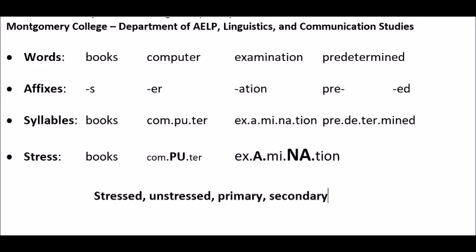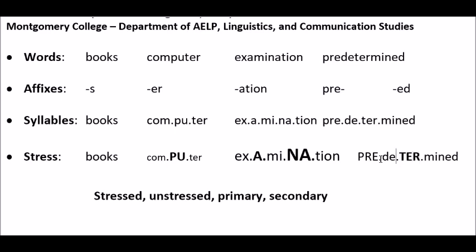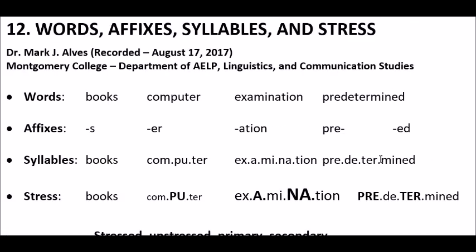Let's try the last one — 'predetermined.' That's our primary stress, that's our secondary stress, and the other two are unstressed. So, we have looked over words, affixes, syllables, and stress — some basic things. I've covered it quickly; if you need to, watch it again.